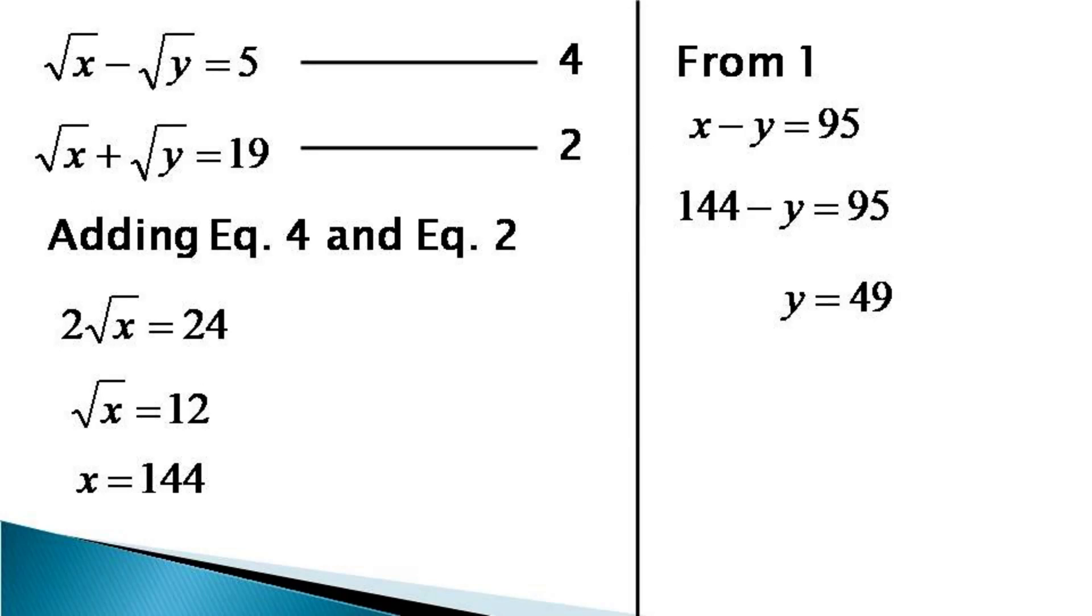Thus the given set of equations has got a solution for both X and Y as X is equal to 144 and Y is equal to 49. These values of X and Y can be verified by putting them in the given set of equations and it can be seen that the values of X and Y satisfy this set of the equations.